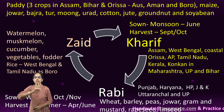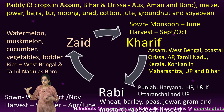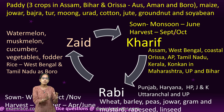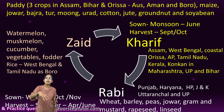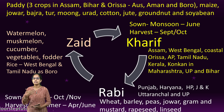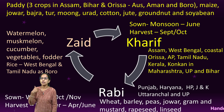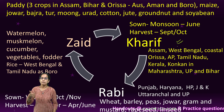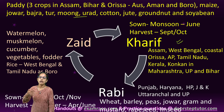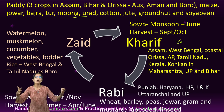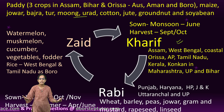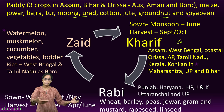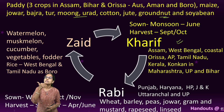Kharif crops coincide with the southwest monsoon. The sowing season is around June and harvest is in September–October. Common Kharif crops include paddy, maize, jowar, bajra, tur, moong, urad, cotton, and groundnut — crops you commonly see during the monsoon season.